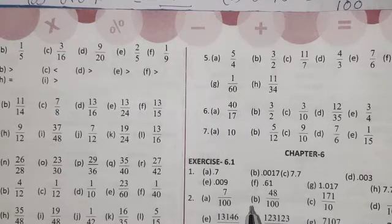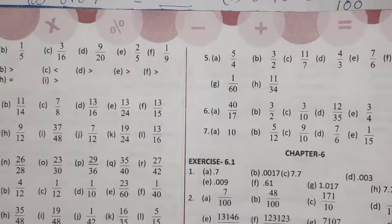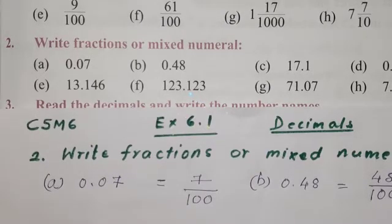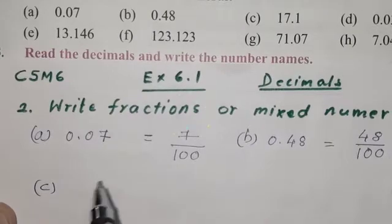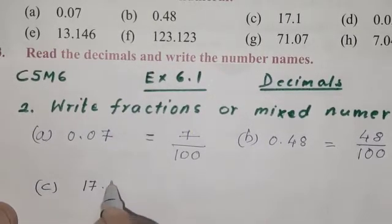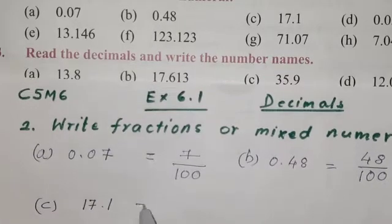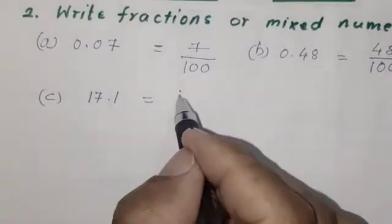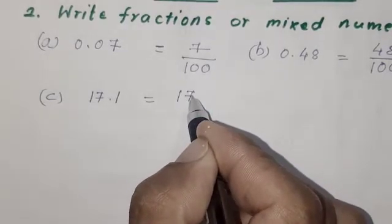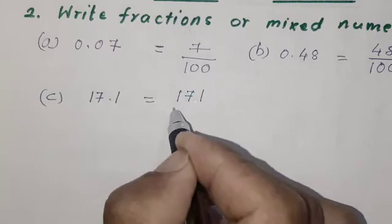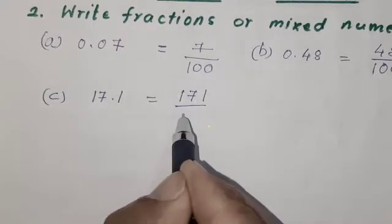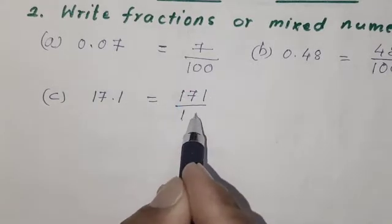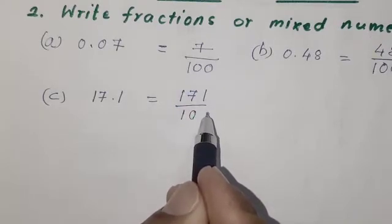A: 7 by 100. B: 48 by 100. How do you get the number? C. 17.1. How do you get the number?